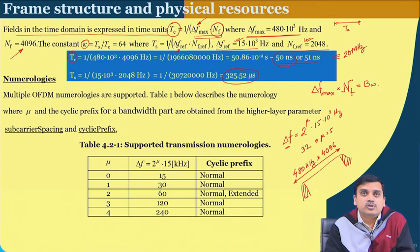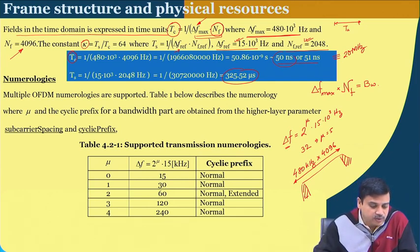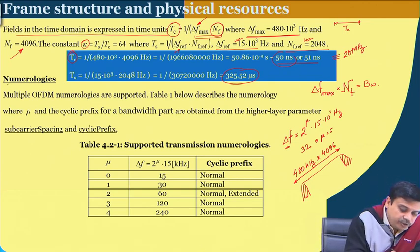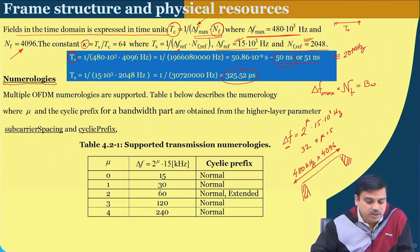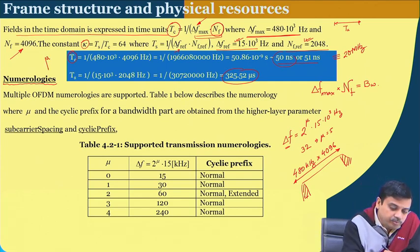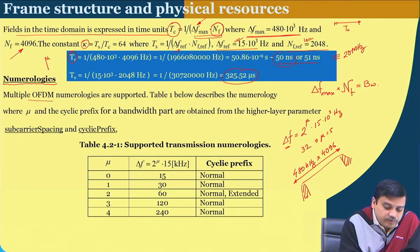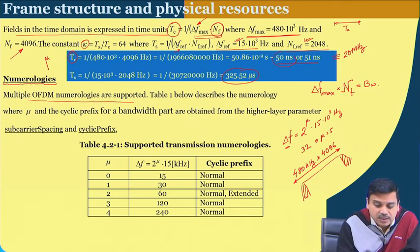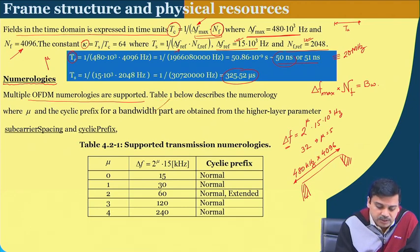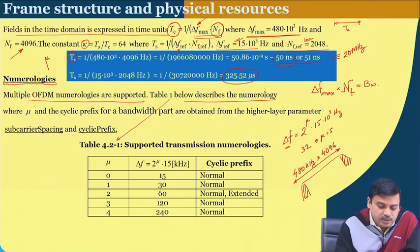Now comes one of the most important and interesting terminologies: numerology. Numerology is nothing but the description of mu, which describes the subcarrier spacing. Multiple OFDM numerologies are supported, and the table below describes the numerology. This table effectively tells us that mu = 0 gives a subcarrier spacing of 15 kilohertz, and corresponding to this we also find a cyclic prefix length.